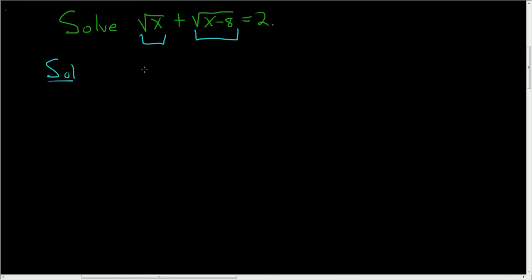So generally when you have two square roots, what you want to do is solve for one of them first and then square both sides. In this case, it might be easier to subtract this guy.